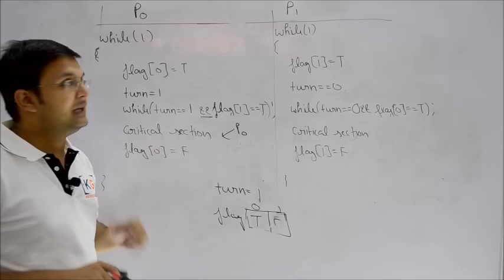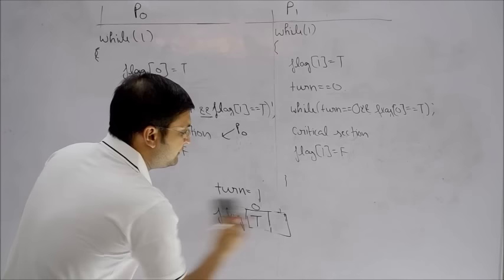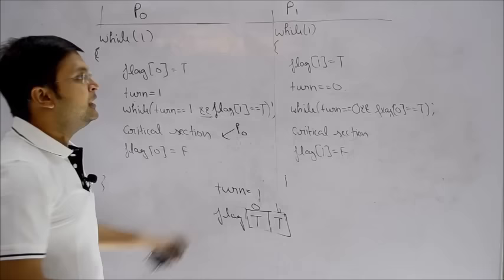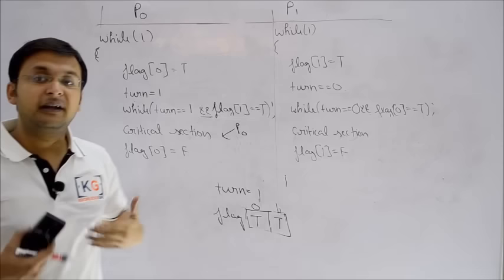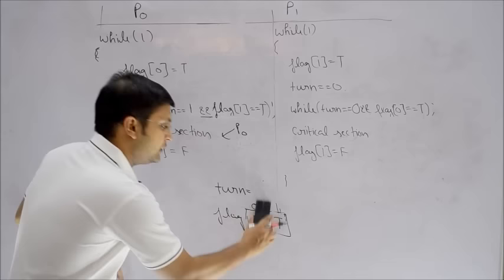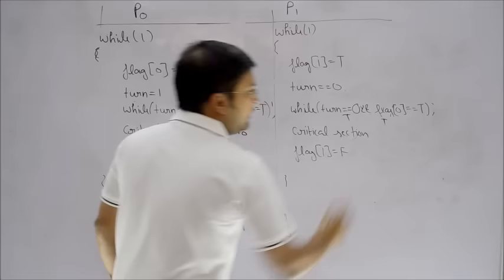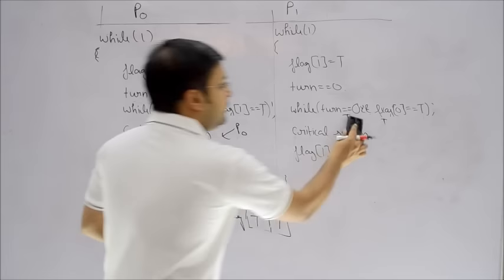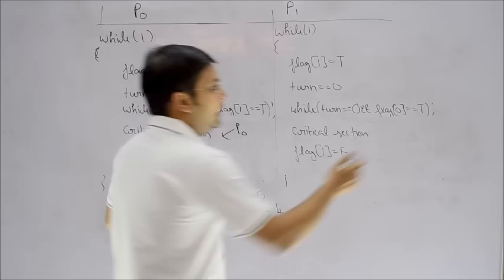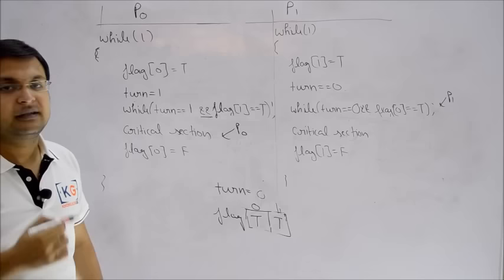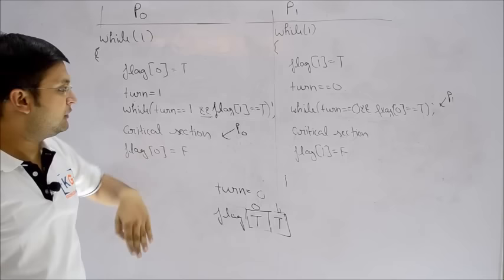Now let's try if at the same time process P1 also becomes interested. Flag[1] is set to true — P1 also wants to enter the critical section. P1 sets flag[1] = true and gives turn to 0. Now check the while condition: turn == 0 is true, and flag[0] is also true, so true AND true gives true. P1 stays in the while loop and never enters the critical section — mutual exclusion is ensured.